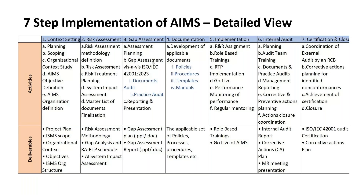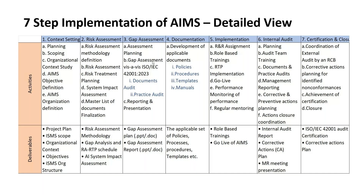Gap assessment is another important aspect. It is not necessarily a fixed step — you can combine scoping and gap assessment at the initial level. Using the list of questionnaires and checklists from ISO 42001, we conduct a gap assessment: document it, audit the organization, and examine what AI controls and processes are currently in place.